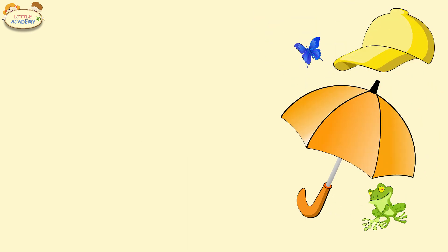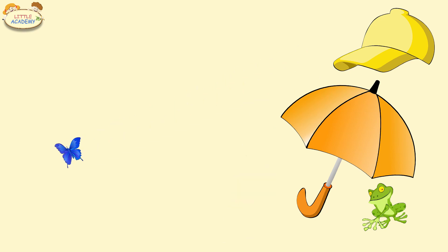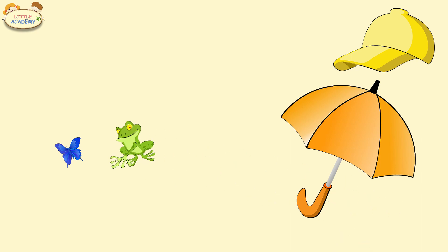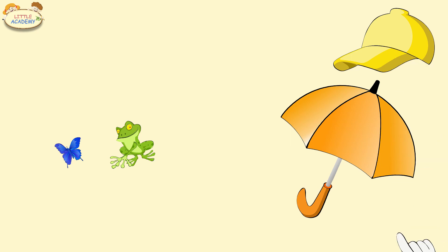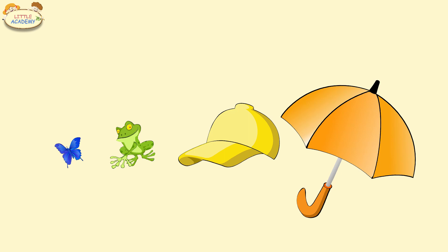Very good. Now let's see which of these objects is the smallest. Yes, the butterfly is the smallest. Which object is larger? The frog is larger. What is even larger? Correct, the cap is even larger. And what is the largest? Great, the umbrella is the largest.